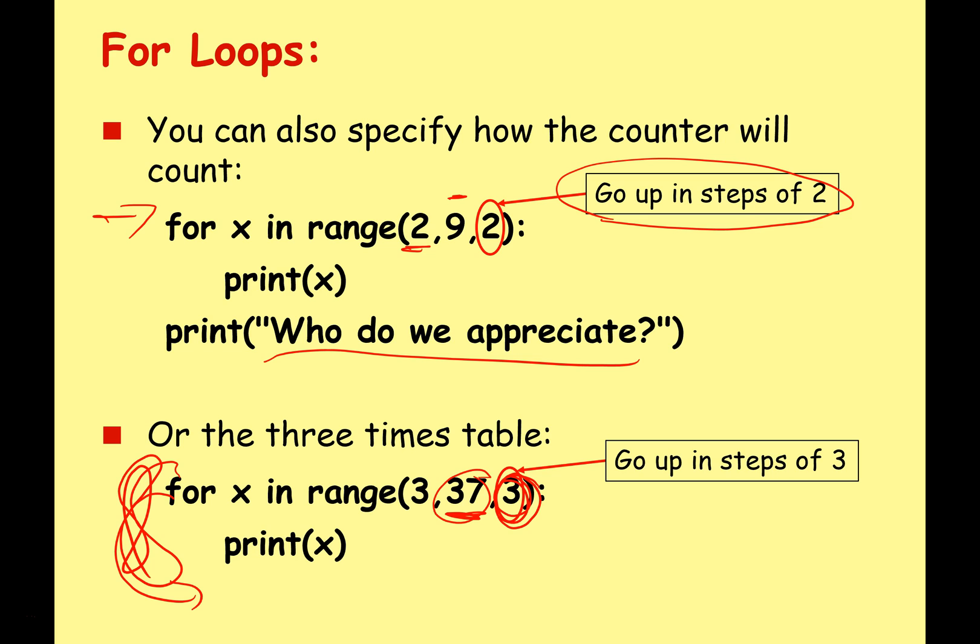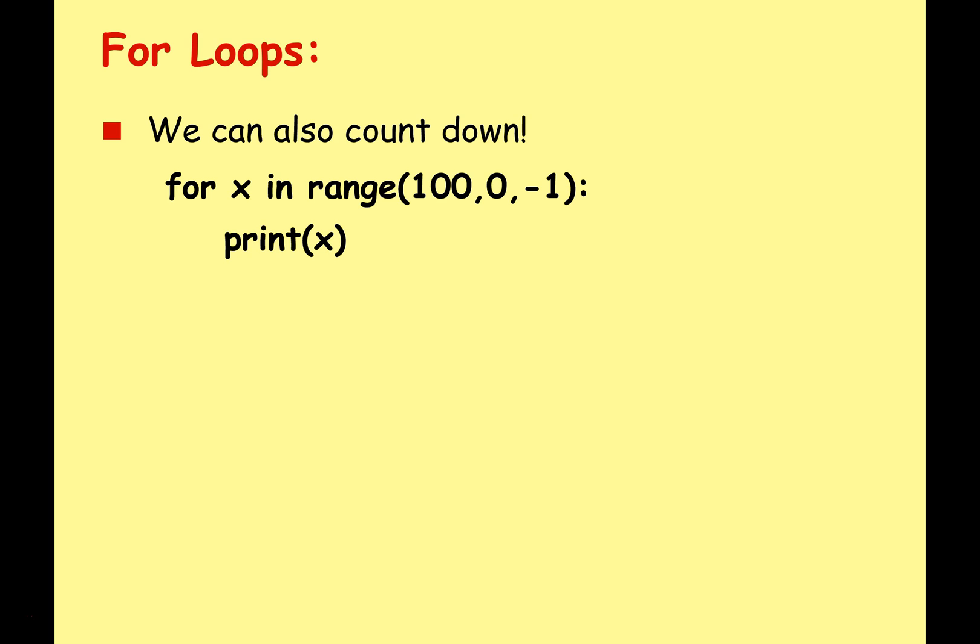We can also count down as well. For x in range 100 comma 0 comma minus 1 print x. This time we're going to start at 100, the loop stops at 0, so remember the last number that we're going to print will be 1, and it's going to do this in steps of minus 1.